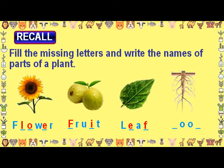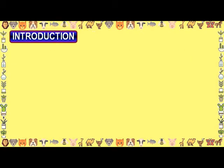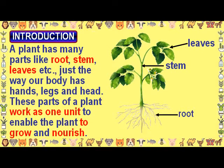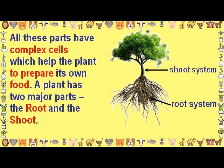Introduction: A plant has many parts like root, stem, leaves, etc. — just the way our body has hands, legs, and head. These parts of a plant work as one unit to enable the plant to grow and nourish. All these parts have complex cells which help the plant to prepare its own food. A plant has two major parts: the root and the shoot.